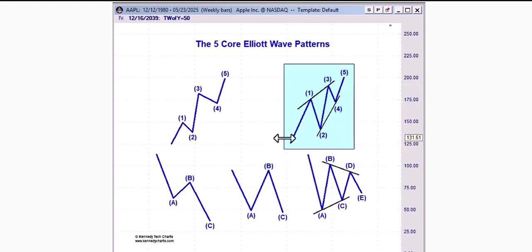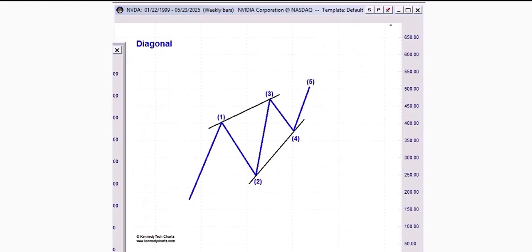What's most important to remember about an ending diagonal is that it is a terminating wave. It's limited as to where it may actually occur, and I'll show you those positions shortly. This is what it looks like utilizing old school terminology - it is referred to as a rising wedge.